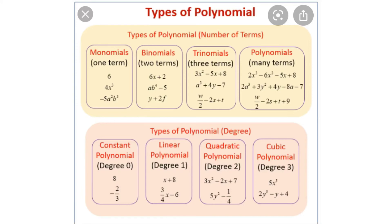On the basis of degree: a constant polynomial has degree 0 — for example, 8 or −2/3. A linear polynomial has degree 1 — for example, x + 8 or (3/4)x − 8. A quadratic polynomial has degree 2 — for example, 3x² − 2x + 7 or 4y² − 1/4. A cubic polynomial has degree 3 — for example, 5x³ or 2y³ − y + 4.